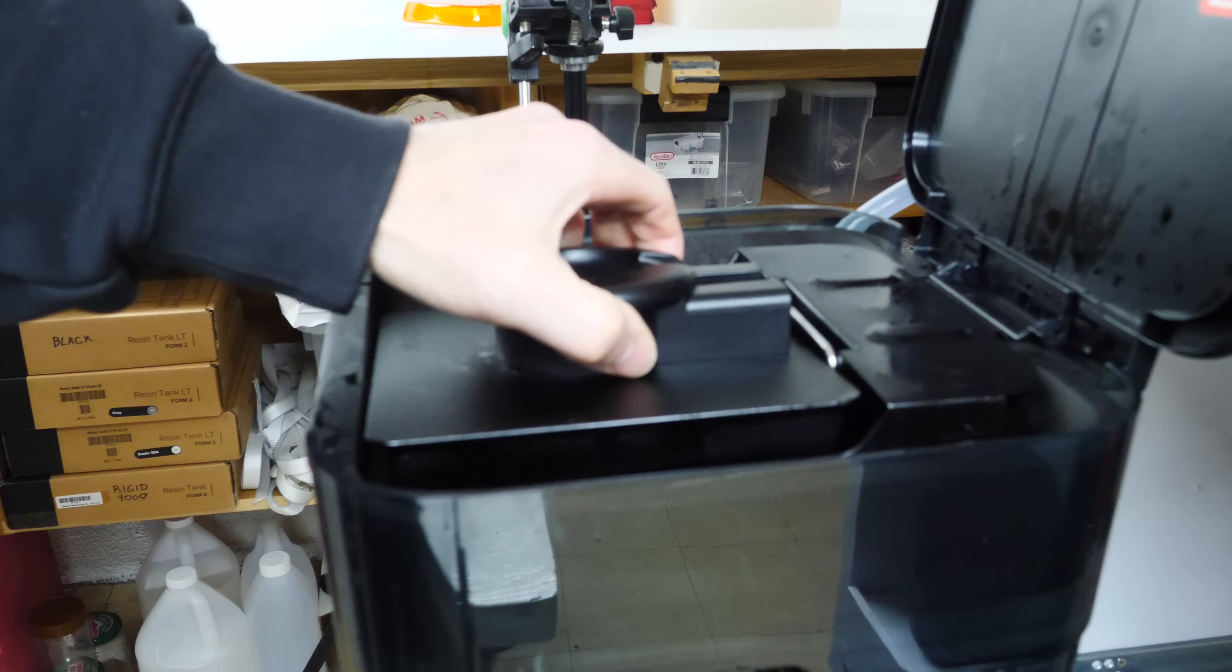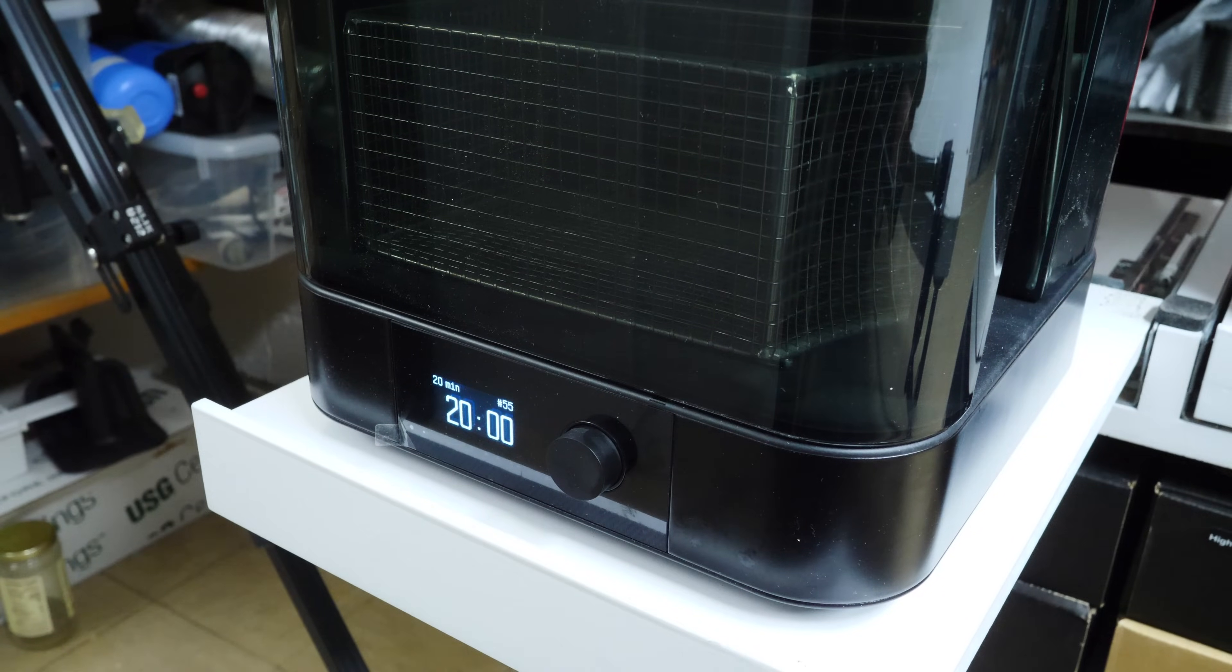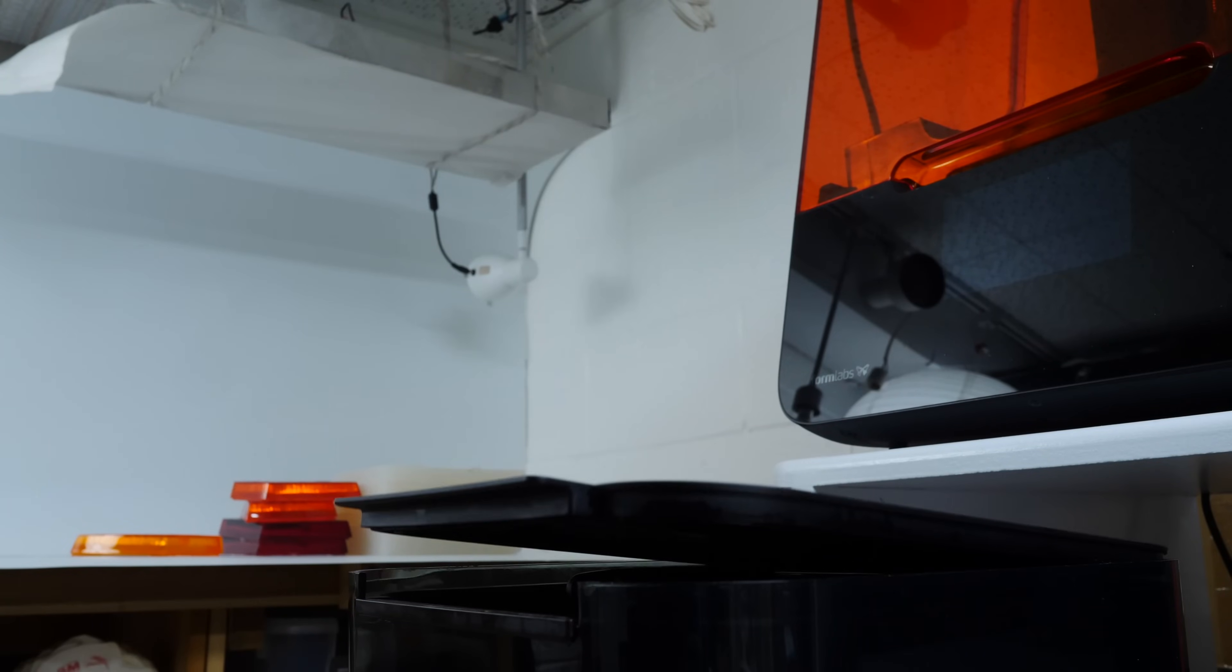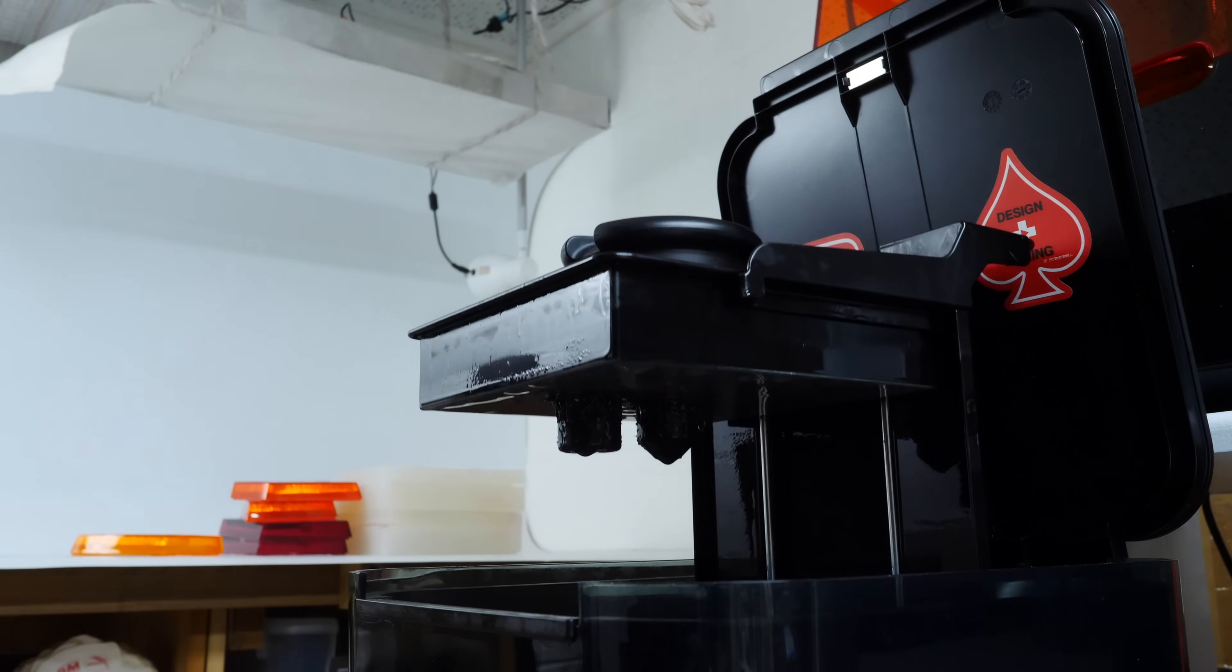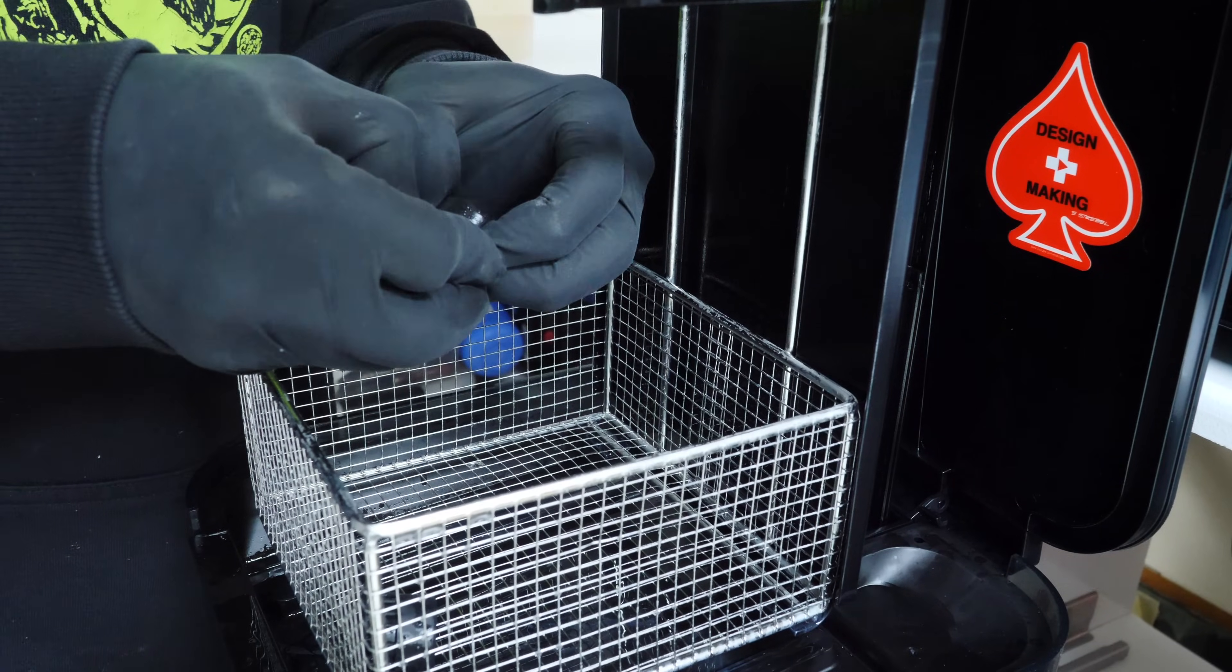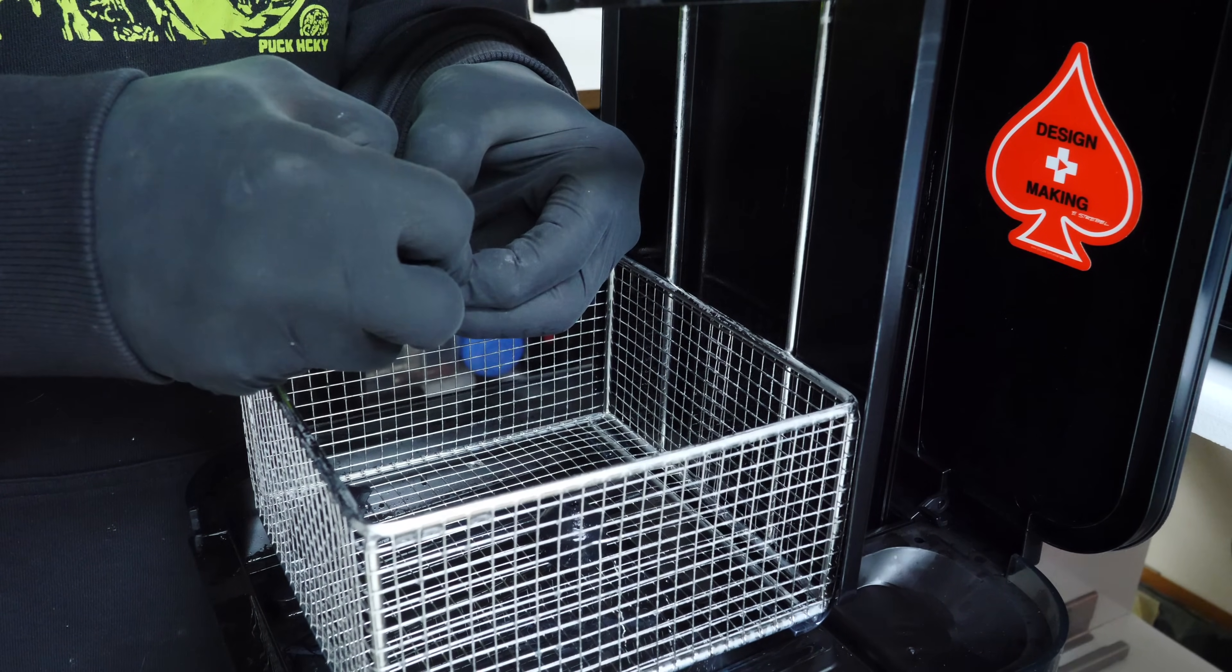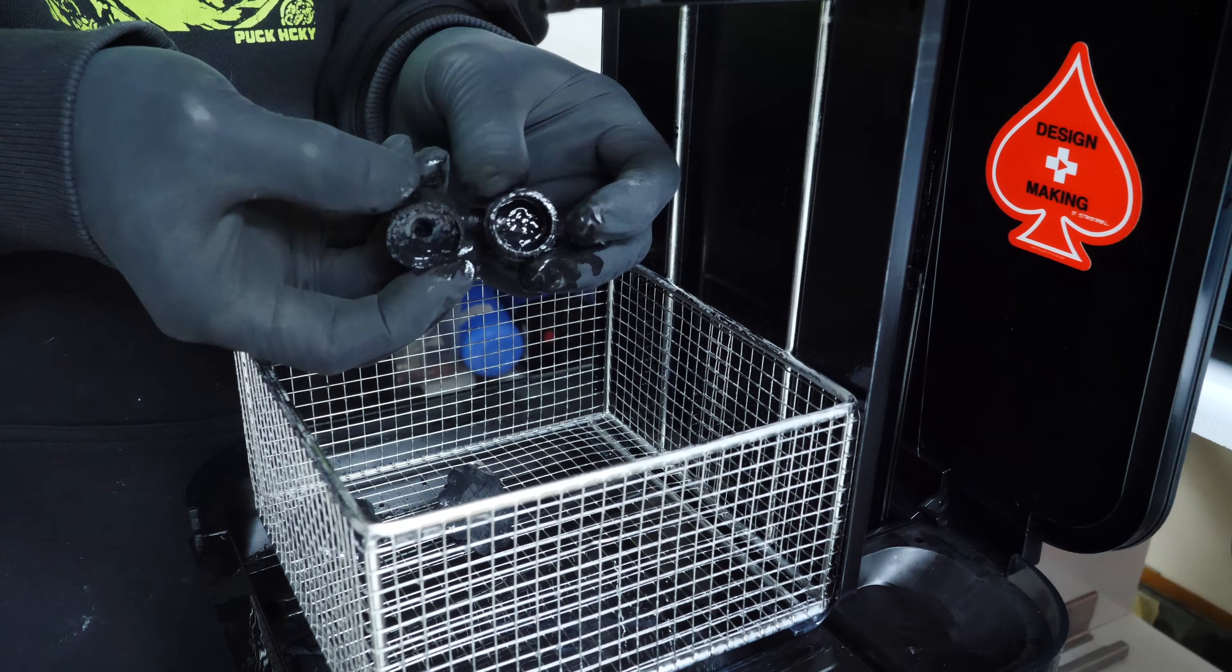I resin 3D print the parts on my Form 2, and we're just washing them right here, and then they're going to get cleaned up so that we can begin the molding process. There'll be a link in the description below for a $500 discount off of a Formlabs machine if you would like to purchase one with my link.